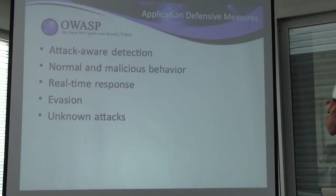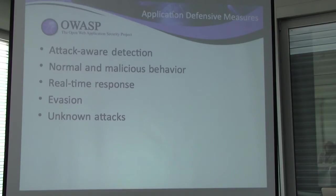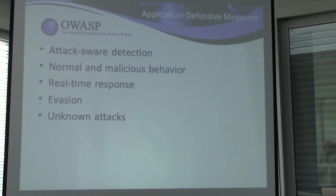The application has the ability to respond in real time — either itself or by signaling other devices like network devices or web application firewalls to respond on its behalf. Those responses can be targeted at an individual user or group of users. It's also less susceptible to clever evasion techniques because the incoming data is already canonicalized and decrypted — you're looking at the data the application is about to use, sidestepping tricks that sneak past network-layer filters.